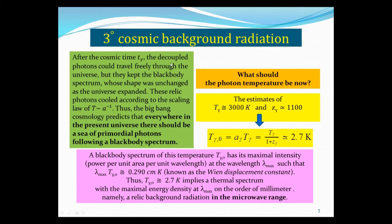After the cosmic decoupling time, the decoupled photons would travel freely through the universe, but they kept the blackbody spectrum, whose shape is unchanged as the universe expands. Those photons cooled according to the scaling law—the temperature scales as 1 over A. Thus, Big Bang cosmology predicts everywhere in the present universe, there should be a sea of primordial photons following a blackbody spectrum.